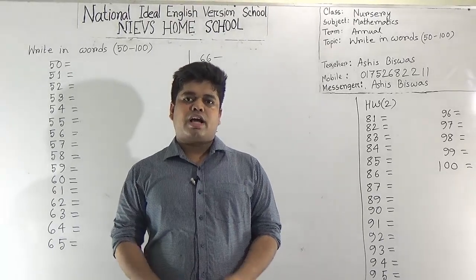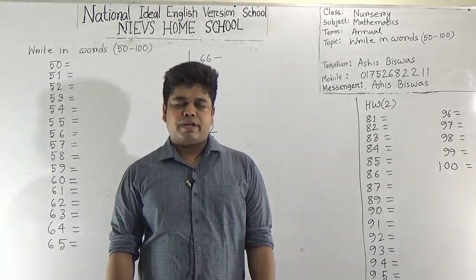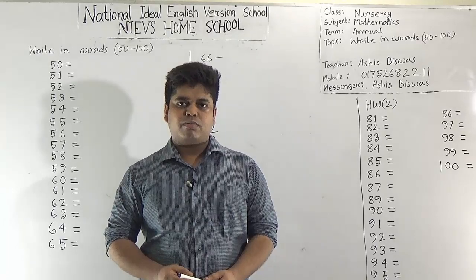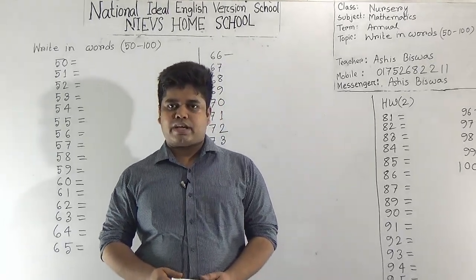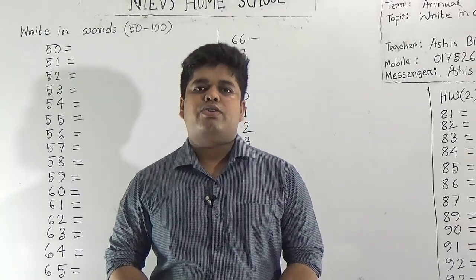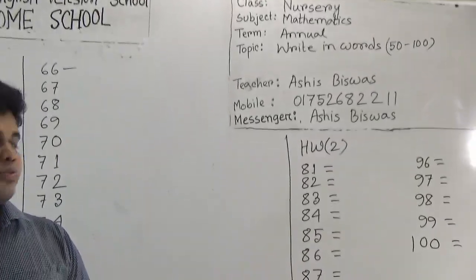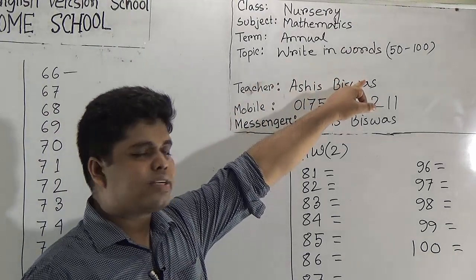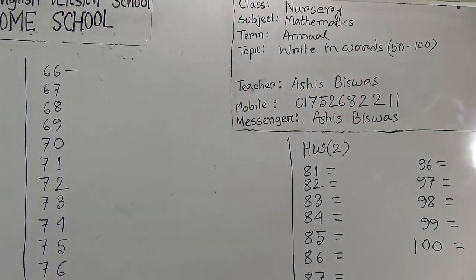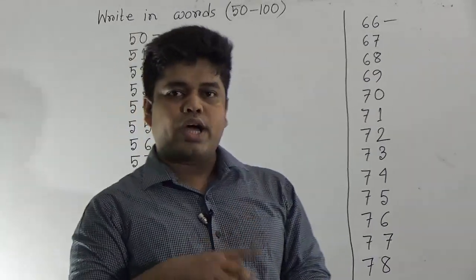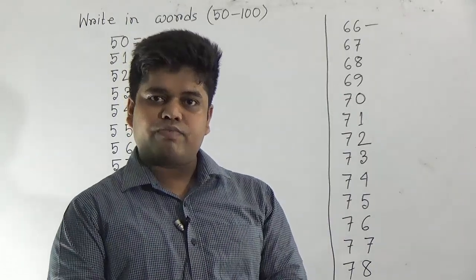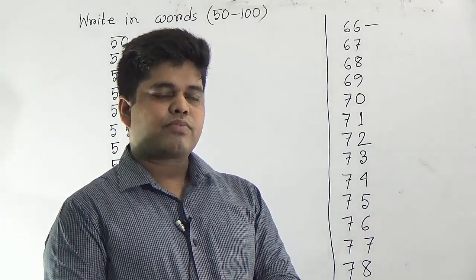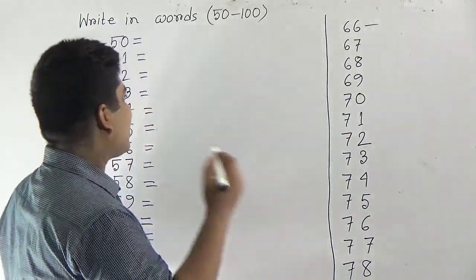Assalamu alaikum, my dear students. How are you? I hope you are all well by the grace of Almighty. Welcome to NIEBS Home School. I am Ashish Bishash, an assistant teacher of mathematics at National Art in English Bashan School, morning shift. Today I am going to take a math class for the students of class nursery. Our today's topic is writing numbers in words from 50 to 100. Before starting our class, we need to know the spelling of 1 to 9 and also the spelling of 20, 30, 40, 50, 60, 70, 80, and 100.